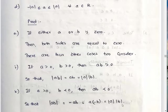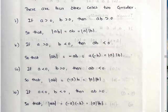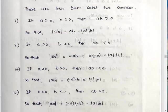If A and B are both positive, then mod AB equals AB equals mod A into mod B. If A is negative and B is positive, then mod AB equals minus AB, and minus A is positive, so mod A is minus A and mod B is B, giving mod A into mod B. If both A and B are negative, then AB is positive, so mod AB equals AB equals minus A into minus B, which is mod A into mod B.